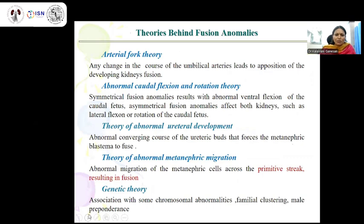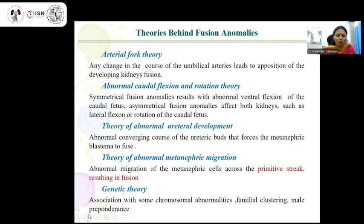There are several theories behind fusion anomalies: the arterial fork theory, the abnormal caudal deflection and rotation theory, the theory of abnormal ureteral development, and the theory of abnormal metanephric migration. Ectopic kidneys are best explained by the theory of abnormal metanephric migration, where there is abnormal migration of metanephric cells across a primitive streak resulting in fusion anomalies. There are also a few genetic causes which can cause fusion anomalies.